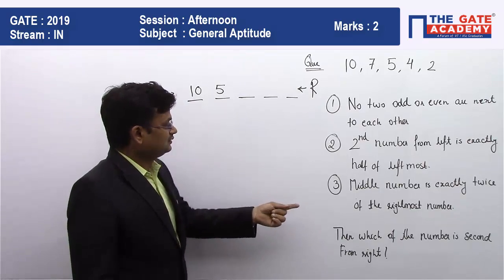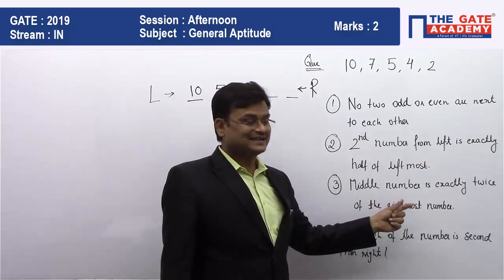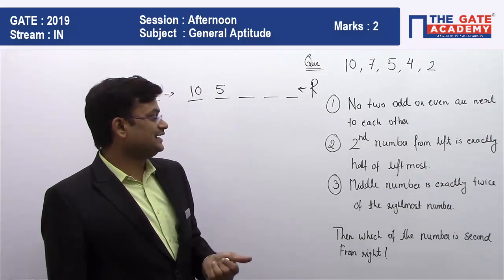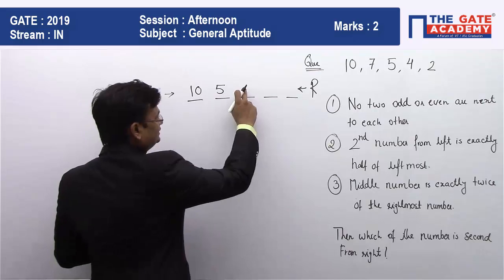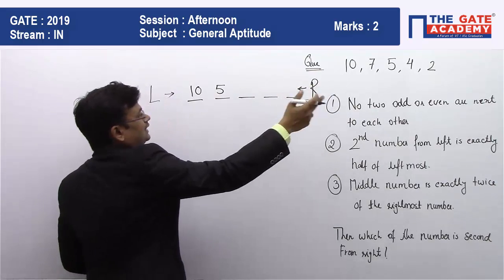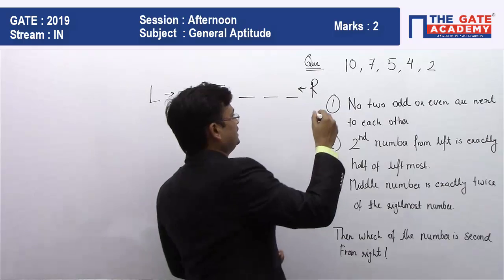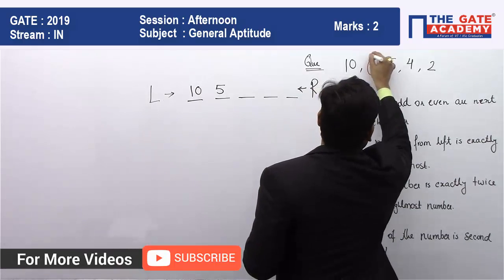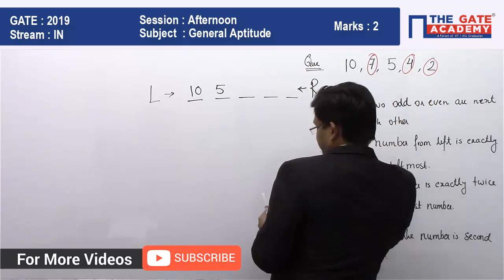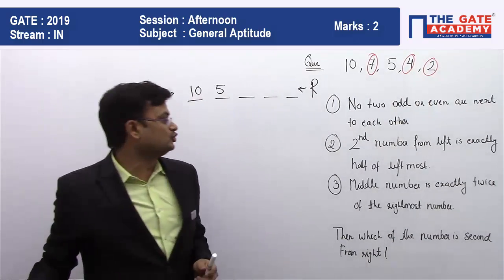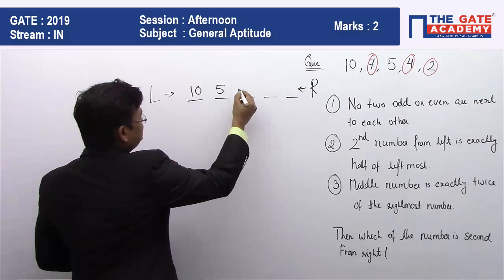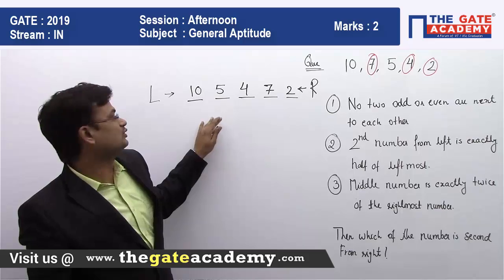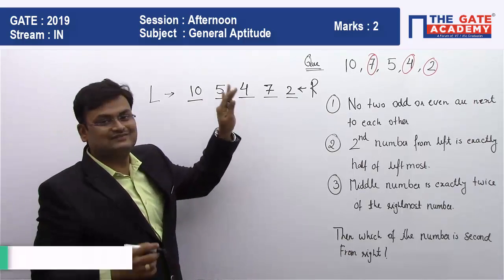Now the third condition: the middle number is exactly twice the rightmost number. The remaining numbers we have are 7, 4, and 2. The twice relationship holds between 4 and 2, so the middle number is 4 and the rightmost is 2. That leaves 7, which goes in the fourth position. So our final arrangement from left to right is: 10, 5, 4, 7, 2.